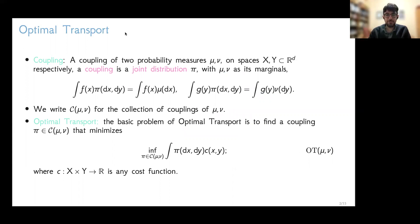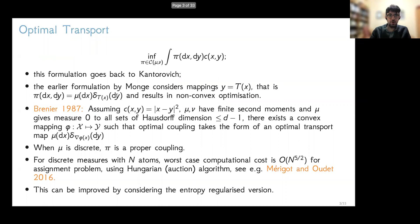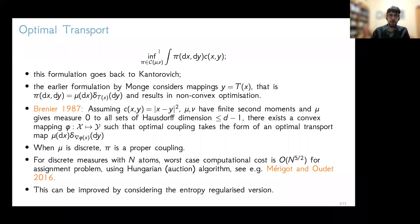Let me give a very brief introduction to optimal transport. A basic object is a coupling: a coupling of two probability measures μ and ν on potentially different spaces X and Y is a joint distribution that admits μ and ν as its marginals. The basic problem of optimal transport is to find the coupling that minimizes the expected cost with respect to some cost function c. This Kantorovich formulation is slightly more recent than Monge's original version, which asks for mappings rather than general couplings. The Kantorovich formulation is much more amenable to analysis because it results in a convex problem.